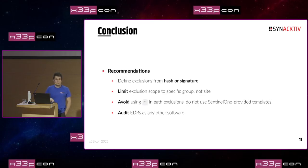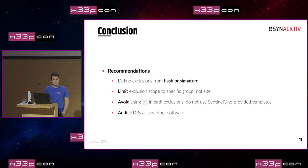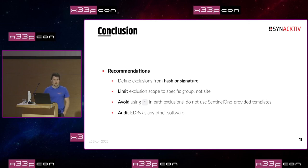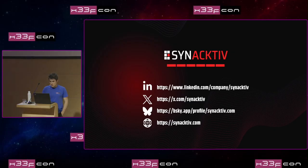For recommendations: even if there are defects in the SentinelOne implementation, there are many things we can do to protect ourselves. First, define exclusions from hashes or signatures rather than file paths. You can also limit exclusions to a specific scope — in the SentinelOne console you can create groups dedicated to specific endpoints. Avoid using wildcards in path exclusions, even if SentinelOne templates always use them. And consider auditing the EDR itself, because at the end it is a piece of software like anything else and should be audited to ensure its security. Thank you for your attention.